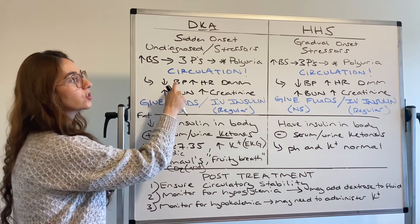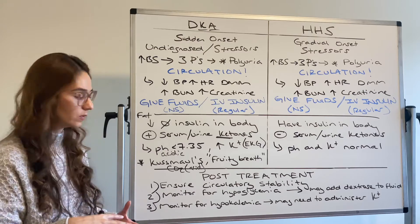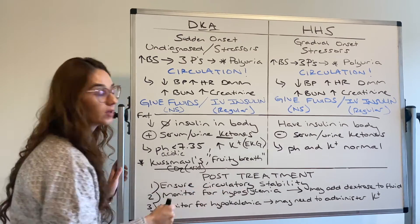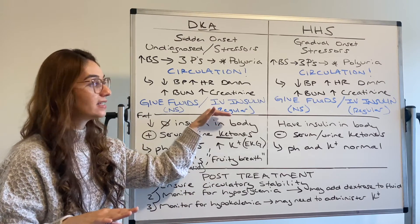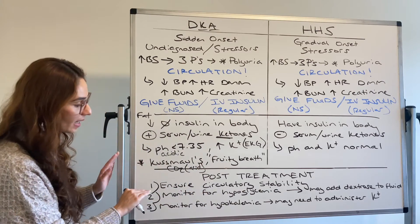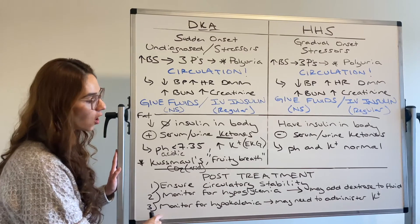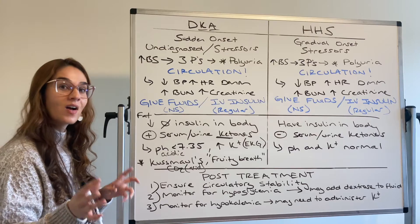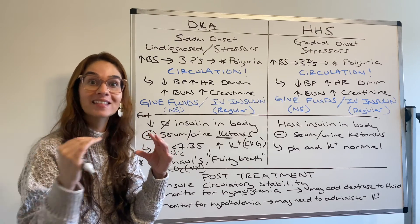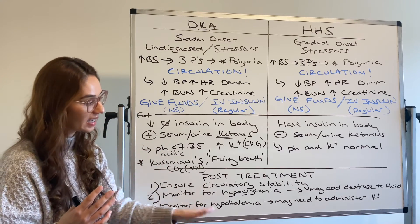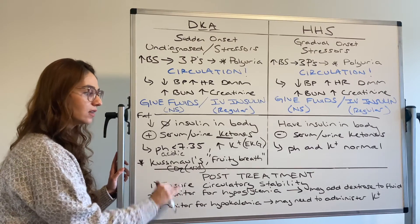Ensure circulatory stability — you need to ensure the blood pressure has gone up, the heart rate has gone down, and BUN and creatinine levels are getting back to normal because we've replaced volume so our kidneys are being perfused. Monitor for hypoglycemia: anytime we give IV insulin — regular insulin — we can drop the blood sugar too low too quickly. Anytime you give something, think about the side effect. Sometimes during treatment we might add dextrose into our fluid when giving IV insulin to try to prevent hypoglycemia. Also monitor for hypokalemia — IV insulin pushes glucose into the cell but also pushes potassium into the cell. So we can see hypokalemia as a side effect of IV insulin administration. We might have to add potassium to our fluids if needed.